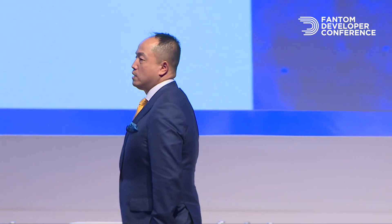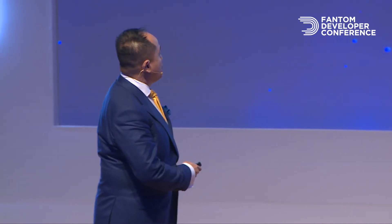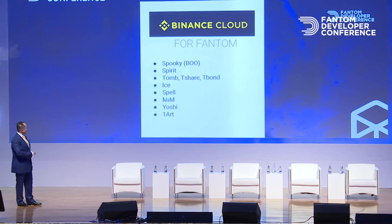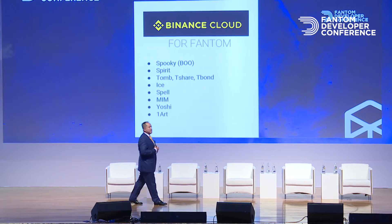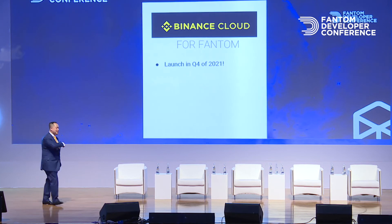You're going to have the Phantom-USDT pair and Phantom base pairs, Tomb pairs. The initial pairs we're providing liquidity for include Spooky, Spirit, Tomb, t-SHARE, t-BOND, ICE, SPELL, Magic Internet Money, Yoshi, and 1ART. A lot of people came to me and said these exchanges want to charge half a million to a million dollars to list. We're doing it for 25 grand to list on Binance Cloud plus another 25 grand — 50 grand total. I don't care about making money from this, I just want to help the Phantom ecosystem. You guys just have to provide the liquidity. It launches in Q4 2021.